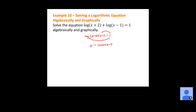Multiply out the right-hand side: 10 equals x squared minus x plus 2x minus 2, which gives 10 equals x squared plus x minus 2. Because we have a quadratic, set this equal to zero — subtract 10 and combine like terms: 0 equals x squared plus x minus 12.